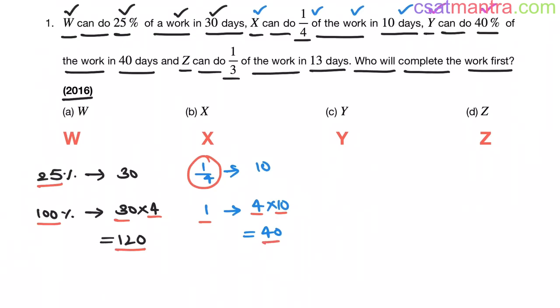Now Y can do 40% of the work in 40 days. So 40% of the work in 40 days, that means 1% of the work is completed in 1 day my friends. So 100% of the work is completed in 100 days. See, 40% in 40 days, that means 1% per 1 day, so 100% per 100 days.